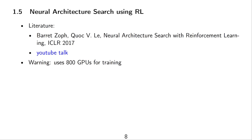The first notable paper in the field proposed to use reinforcement learning for neural architecture search. There is a link to a YouTube talk about the paper that summarizes the main ideas very well. Just a warning up front: the authors used 800 GPUs for training this reinforcement learning network to obtain their results.